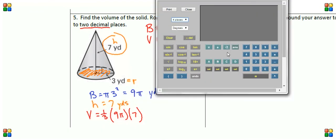So I'm going to put in one-third. Remember we put our fraction in with parentheses: 1 divided by 3, close parentheses, times 9 times pi times 7 equals, and our answer is 65.973.